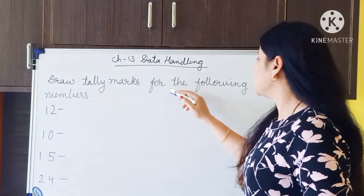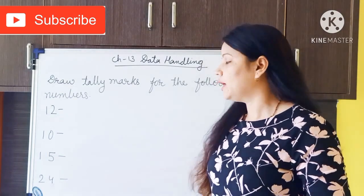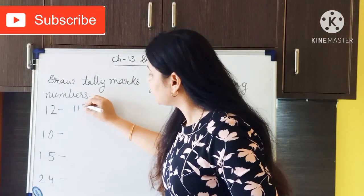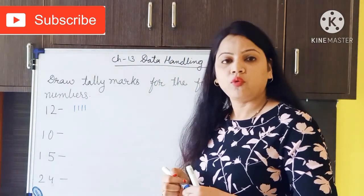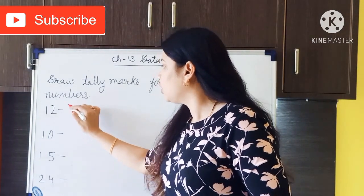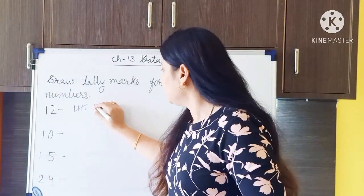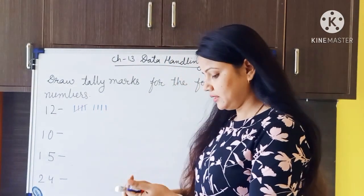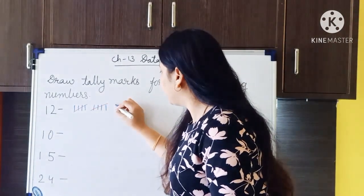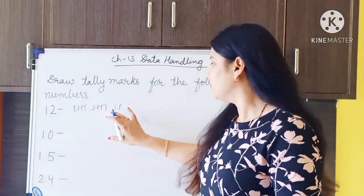Now the next question: draw tally marks for the following numbers. For 12, first draw 4 vertical dashes, then 1 slanting line — that gives a group of 5. Then continue: 6, 7, 8, 9, 10, 11, 12. You can see there are two groups of 5 plus 2, so 10 plus 2 equals 12.